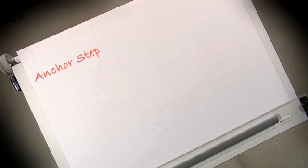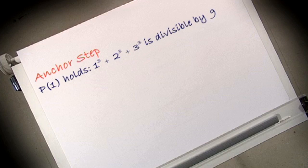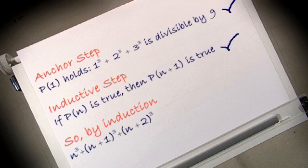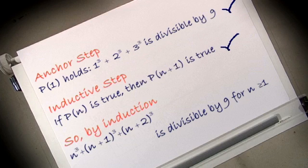So we started with our anchor step. For our anchor step we took n equals 1 and we showed that that was true. Our next step was the inductive step. So by induction we've shown that the general case P(n) is true for n greater or equal to 1. So my statement n cubed plus (n+1) cubed plus (n+2) cubed is divisible by 9 for n greater or equal to 1. This has been proved by induction.